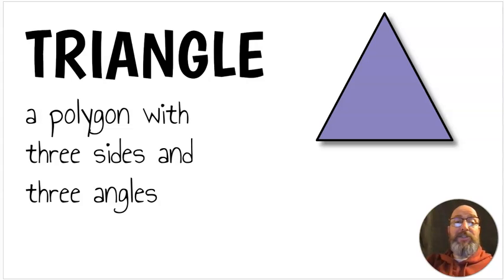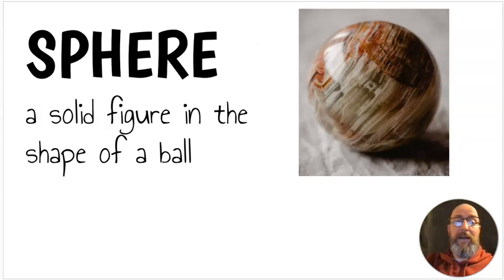Next, another polygon is a triangle. A triangle is a polygon with three sides and three angles. We see our three sides, 1, 2, 3, and our three angles, 1, 2, 3. We can find an angle at each of the vertices. A sphere is a solid figure in the shape of a ball. So the best way to think of a sphere is a ball. It's a 3D shape, a 3D figure, and that is a sphere.